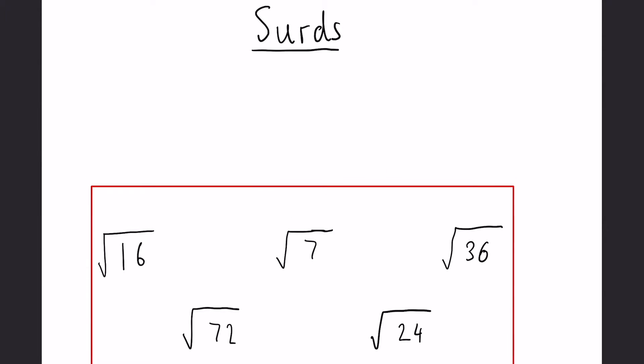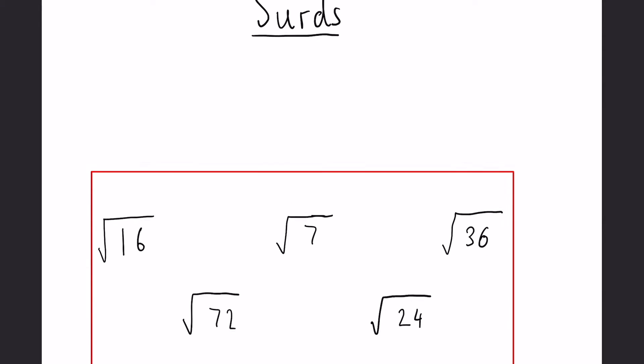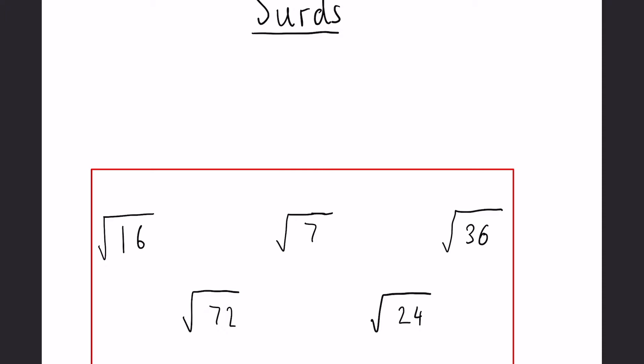If we have a look at these five here, three of them are classed as surds. A surd is just when a number is under a square root but it can't be square rooted easily. So look at these five here, quickly pause the video and try and identify which of them can't be square rooted easily.